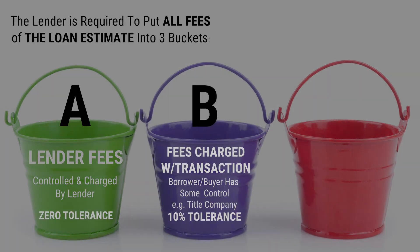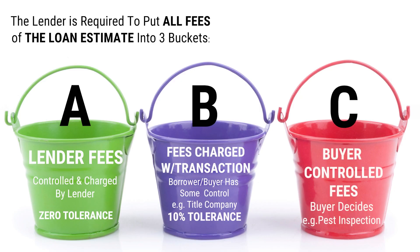Then there's Bucket C — those are things the buyer really does control themselves. For example, if they want a pest inspection, we have no control over who they choose. They send us the invoice and we make sure it gets paid at closing. There's no built-in tolerance on that; it's whatever the invoice comes in at. And that's the buyer's decision anyway.